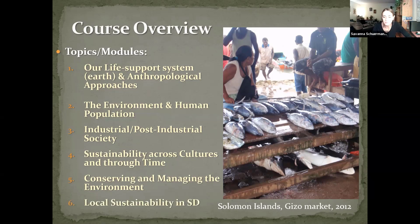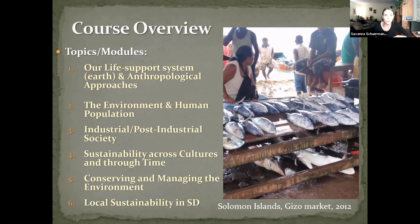Lastly, we'll wrap up the course with sustainability here in the local San Diego region. We'll talk about water use, transportation and automobility, and suburban and urban sprawl. Are these patterns sustainable? And more importantly, are they inevitable? The answer is no — it's been designed and created this way.